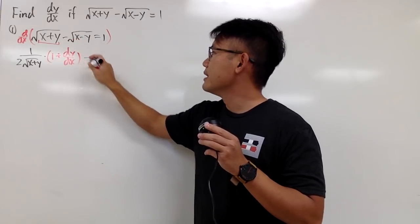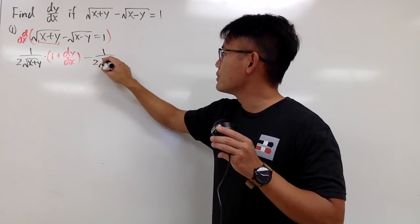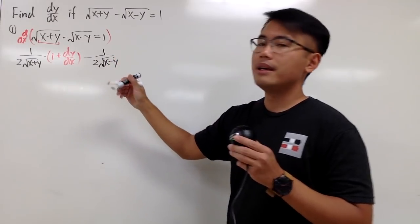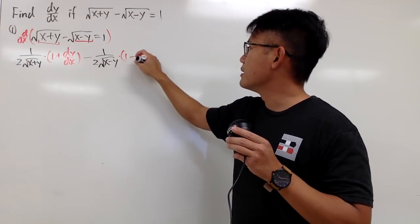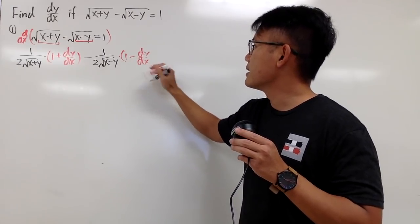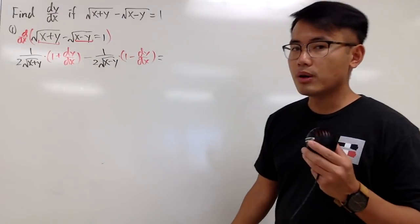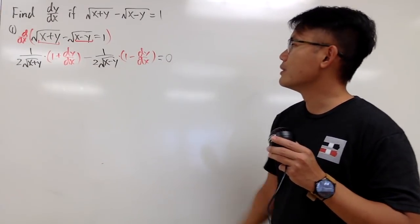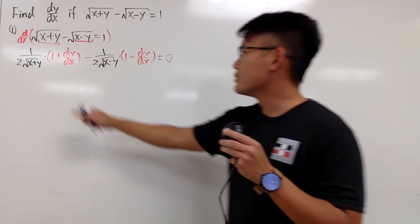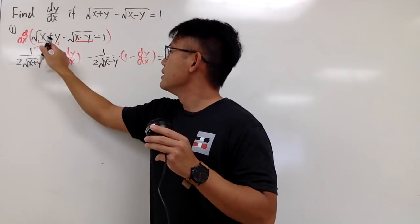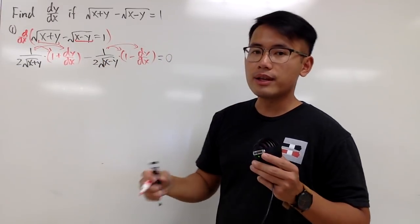Then we have the minus the derivative of the square root again, so it's 1 over 2 square root of (x minus y). We multiply by the derivative of the inside, which gives us 1 minus dy/dx. This is equal to the derivative of 1, which is nicely equal to 0. Then we are going to distribute this so we can collect like terms and isolate the dy/dx.